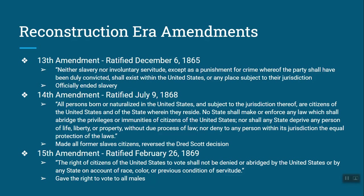Last but not least, there are three Reconstruction-era amendments. The 13th Amendment, ratified December 6, 1865, officially ended slavery. The 14th Amendment, ratified July 9, 1868, made all former slaves citizens and officially reversed the Dred Scott case. The 15th Amendment, ratified February 26, 1869, gave the right to vote to all males. However, it only says the right to vote shall not be denied on account of race, color, or previous condition of servitude — it says nothing about money or taxes. So Southerners found other ways to keep African Americans from voting.